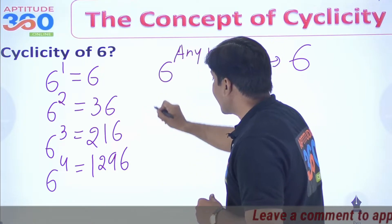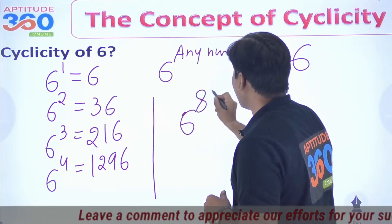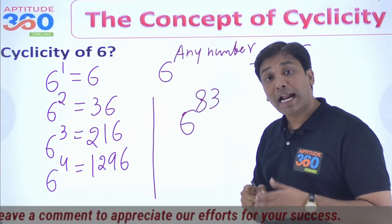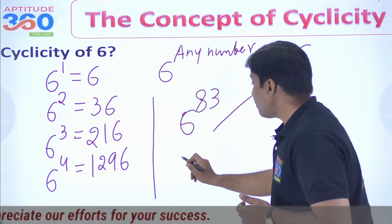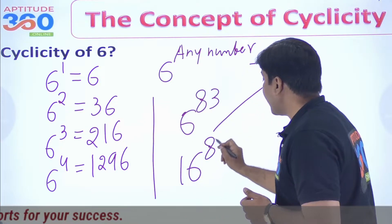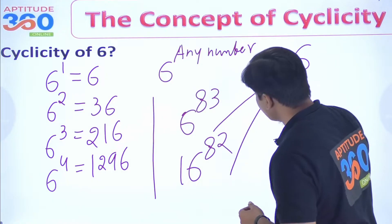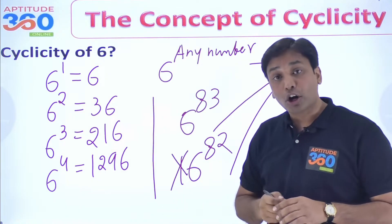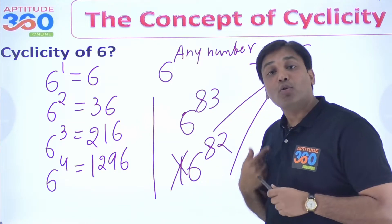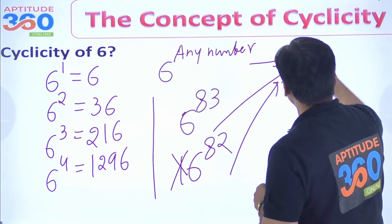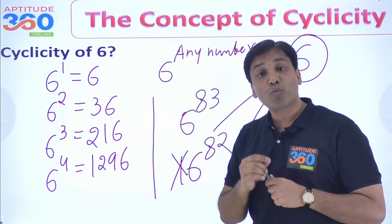So can I say: 6 to the power 83 — what is the digit at the unit place? I would say this is 6. And how about 16 to the power 82 — what is the digit at the unit place? I would again say 6, because this 1 does not matter. And 6 to the power any even number — what is the digit at the unit place? We will give it 6. Which is the cyclicity. So this is very simple, right?